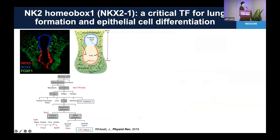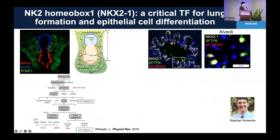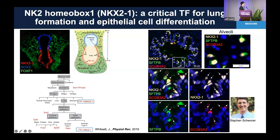NKX2.1 is a well-known transcription factor important for specification of the lung during development and also for specification of alveolar type 2 cells. When we look at which cell types express NKX2.1 in normal human lungs as a positive control, NKX2.1 is highly expressed in SFTPB-positive cells but not SCGB3A2-positive cells, meaning these are alveolar type 2 cells. In small airways, NKX2.1 is also expressed in cells that express both surfactant protein B and SCGB3A2 — meaning these small airway-unique secretory cells express high levels of NKX2.1 just like alveolar cells, consistent with our culture-based ATAC-seq data.